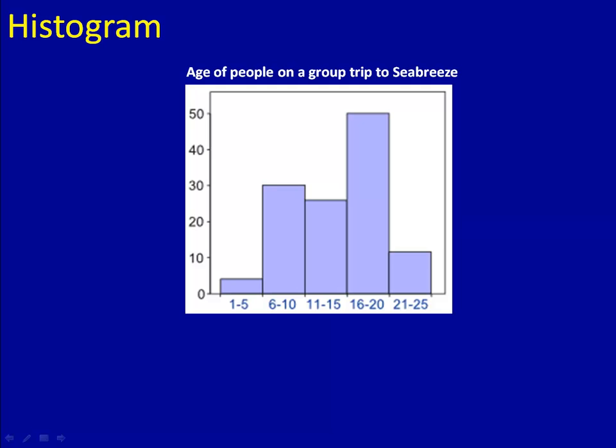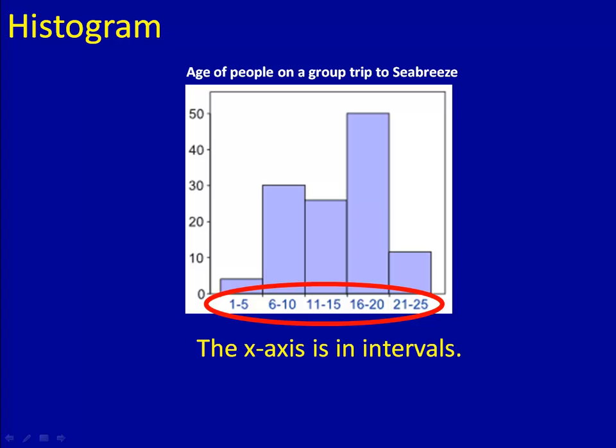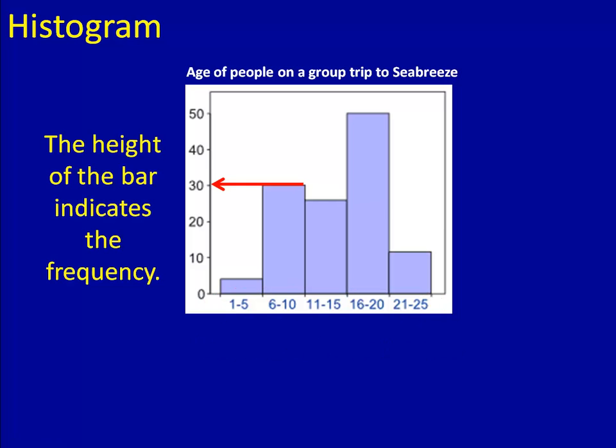Now let's talk about another way that we can organize our information. We call this a histogram and it looks like this. Suppose we have a group that goes to sea breeze for a summer trip. We ask everyone how old they are and we've recorded the information in this graph. A few things worth noting about this graph are as follows. These are important things. The x-axis is given in intervals, 1 through 5, 6 through 10, 11 through 15, etc.